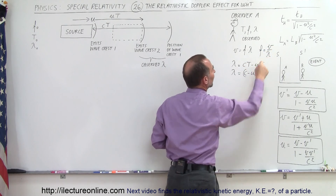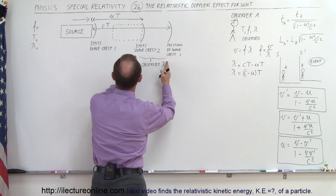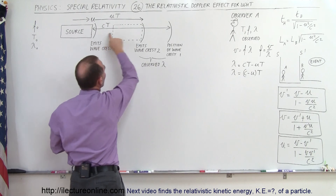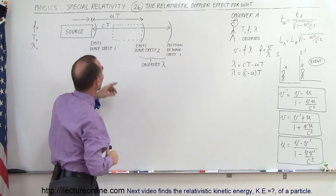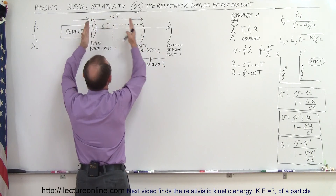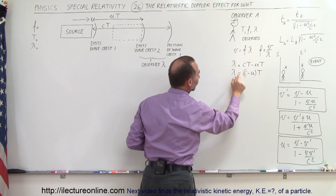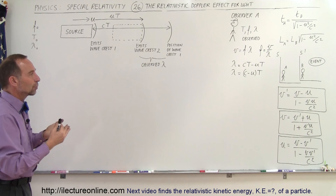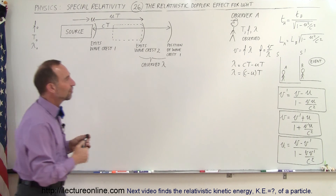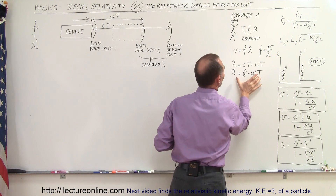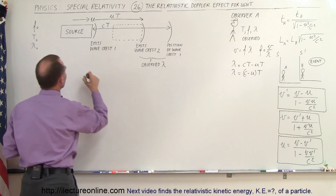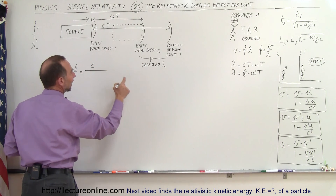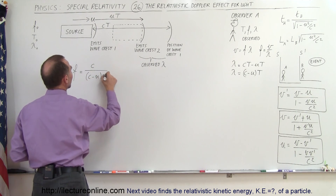From basic wave equations, the velocity equals frequency times wavelength, so frequency equals velocity divided by wavelength. The observed wavelength equals the speed of light times the period between two wave crests — the distance traveled by one wave crest — minus the distance traveled by the source, which is u times the period T. So the observed wavelength is (c minus u) times T. The observed frequency f equals the speed of light divided by the wavelength, so f equals c divided by (c minus u) times T.